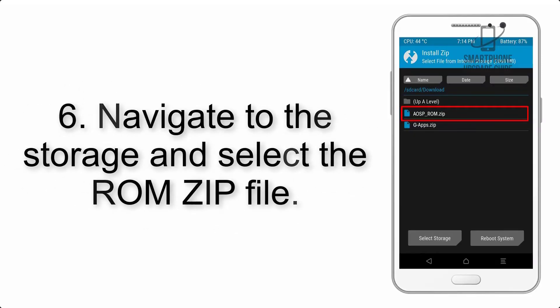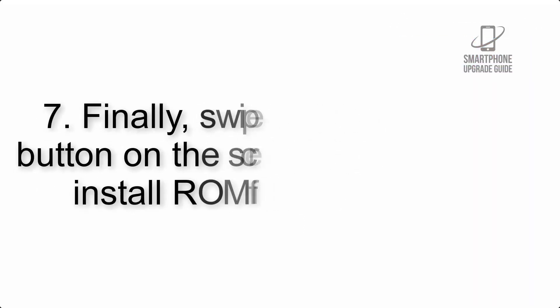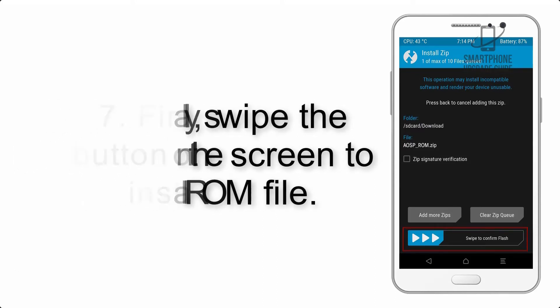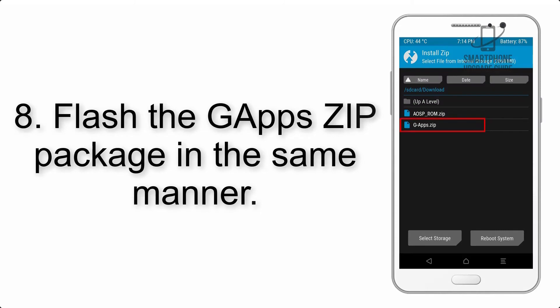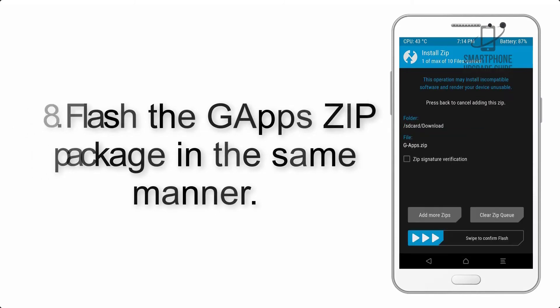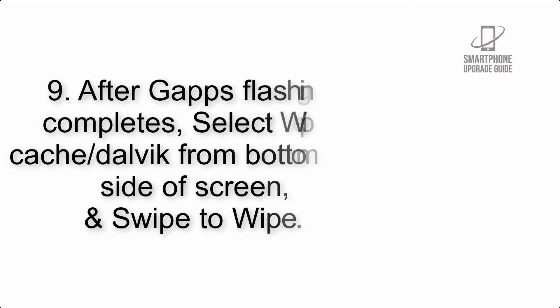Step 5: Go back to the recovery main screen and tap on the Install button. Step 6: Navigate to the storage and select the ROM zip file. Step 7: Finally, swipe the button on the screen to install the ROM file.